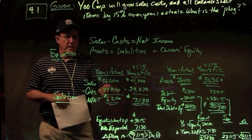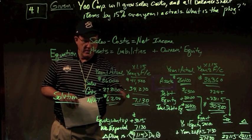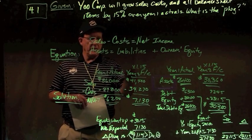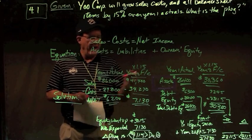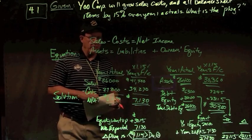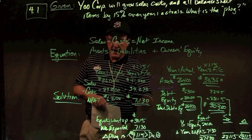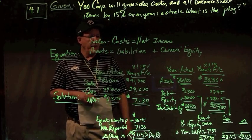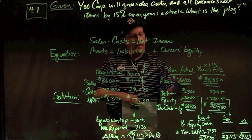So I take my year one numbers: sales 36,000, cost of 29,800, and then PAT of 6,200 and simply multiply them by 1.15. And I get sales of 41.4, cost of 34,270, and then income of 7,130 in year number two forecast.